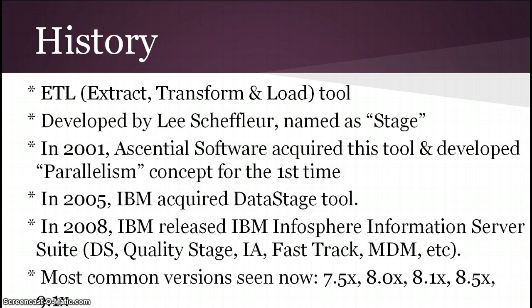DataStage was first developed by Lee Shuffler, who first named it 'Stage.' Then in 2001, Ascential Software acquired this tool and developed the first parallelism concept. In 2005, IBM acquired the DataStage tool from Ascential Software. Once IBM acquired it, they released many versions starting from 6, 7, 7.1, 7.5, and then in 2008 released the whole package called IBM Information Server, which includes DataStage, QualityStage, Information Analyzer, FastTrack, Master Data Management, and many other tools.